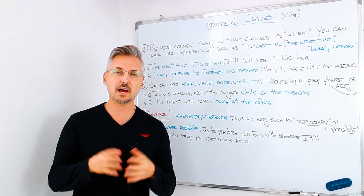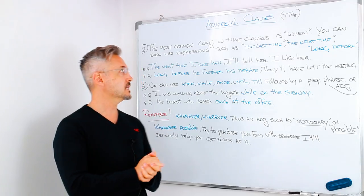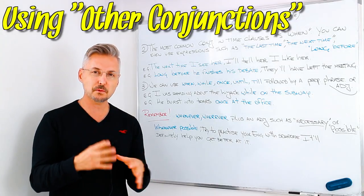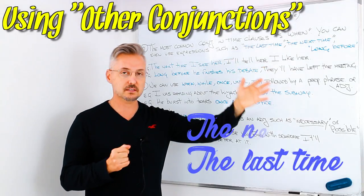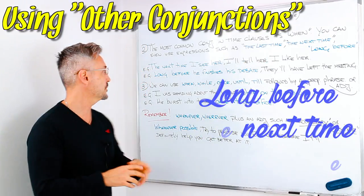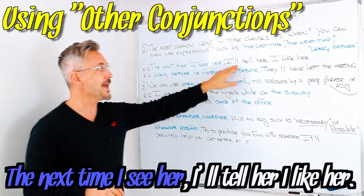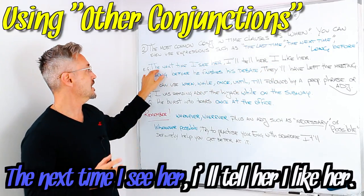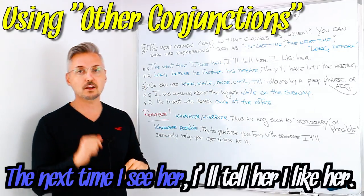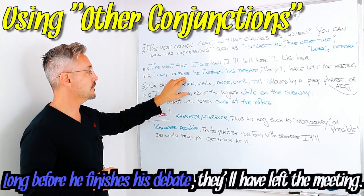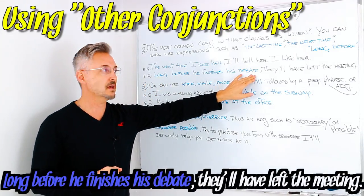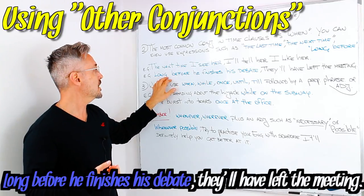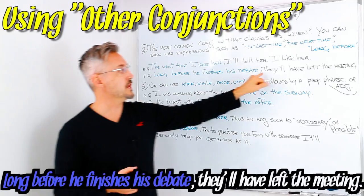The most common conjunction in time clauses is 'when,' but there are expressions you can use instead, such as 'the last time,' 'the next time,' and 'long before.' Example: 'The next time I see her, I'll tell her I like her' — also a first conditional. Another example: 'Long before he finishes his debate, they'll have left the meeting' — 'long before' is used in the time clause instead of 'when.'